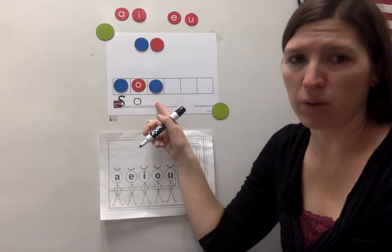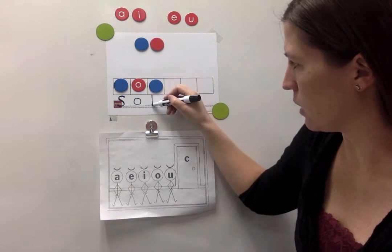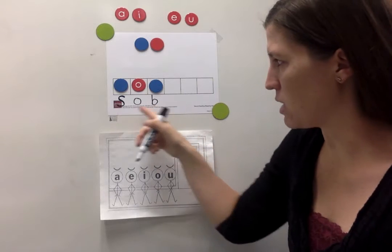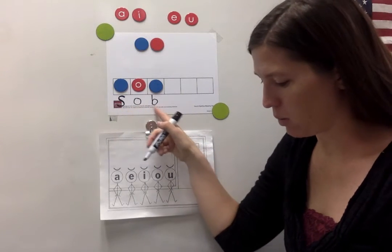B. B is down, up and around. B. S, AH, B. Sob.